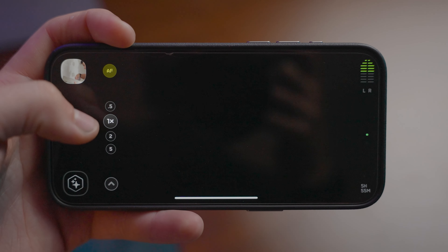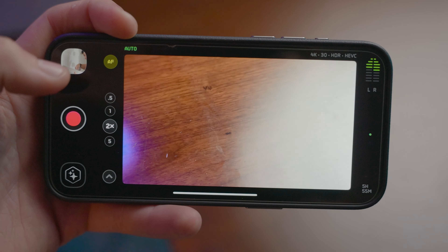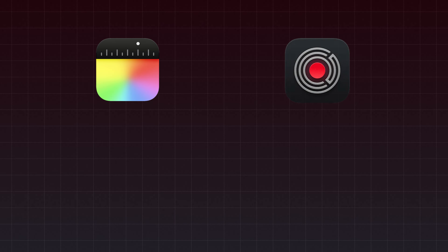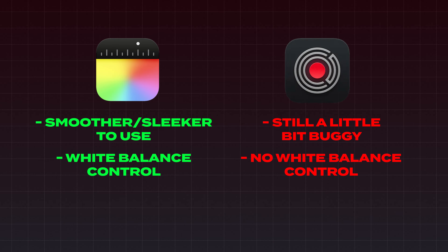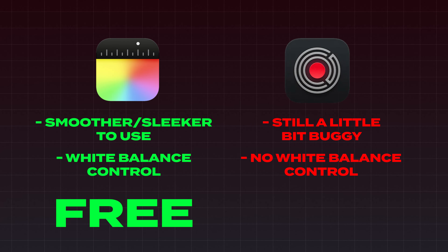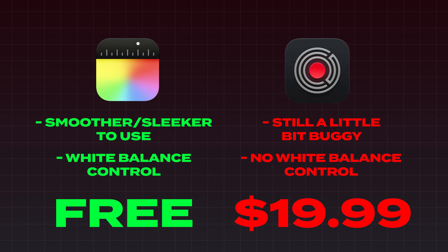Overall, Kino is a really nice, simple, and easy-to-use app that gives you the settings you definitely need without much more to overwhelm or confuse you. It is a new app though, so every once in a while it can feel a little buggy, like the subtle delay when switching between lenses, but big picture it's a smooth and sleek app. However, with Final Cut Camera just being released, it's basically taken what Kino offers and made it smoother, sleeker, and easier to use in most situations. Not to mention Kino lacks white balance control, which for me is a huge negative. Also, Final Cut Camera is free compared to Kino which costs $19.99.